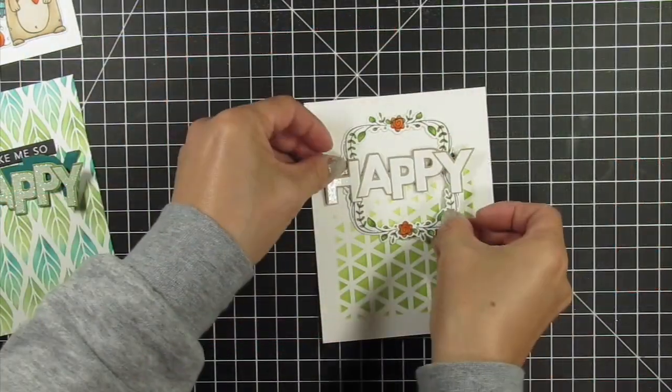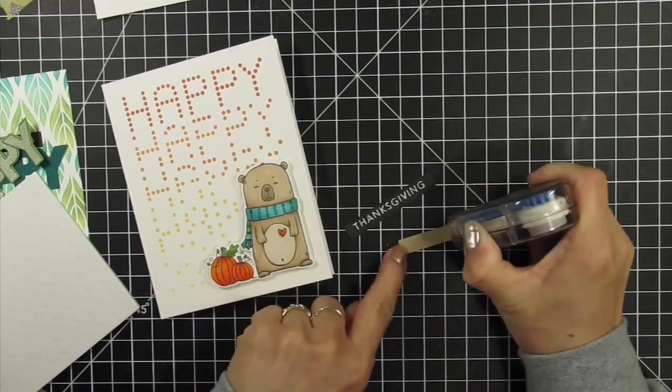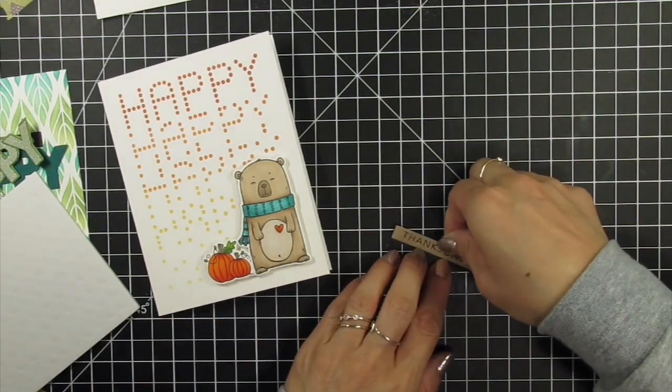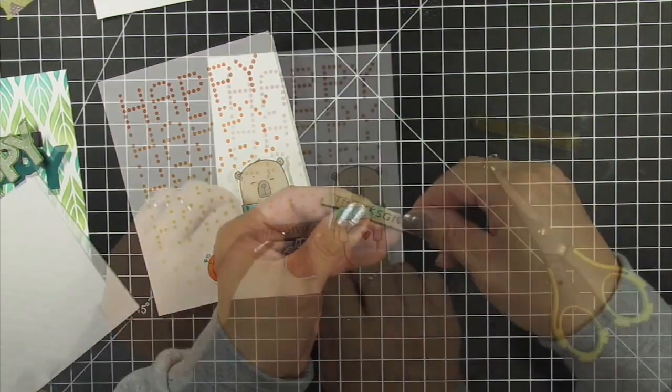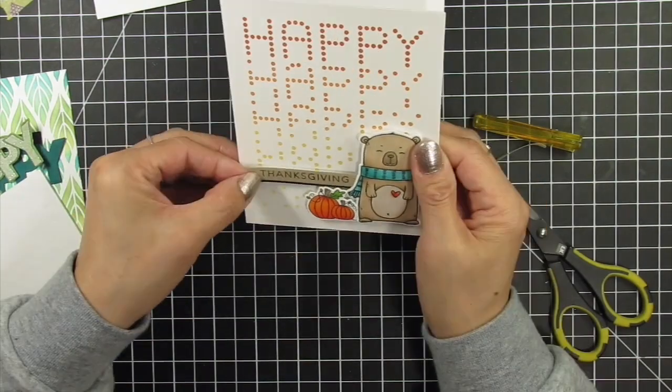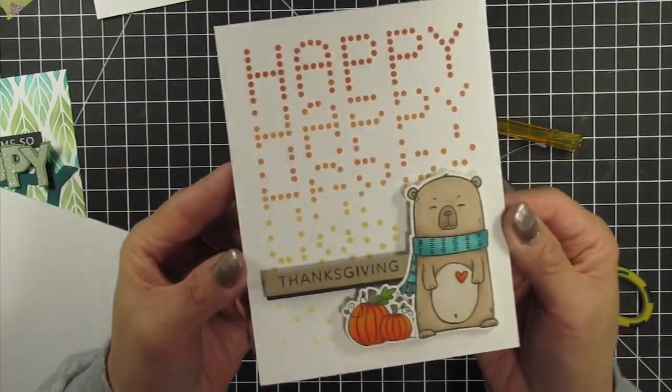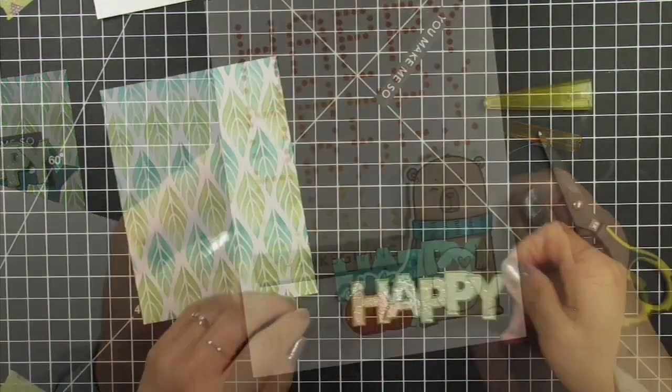Now it's time to assemble all the cards. I ended up swapping out the Pineapple sentiment for the Truffle one and adhered it to a black strip to provide emphasis and separate it from the images, and also to allow it to pop against the stenciled background.